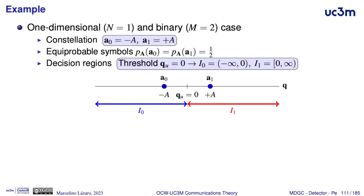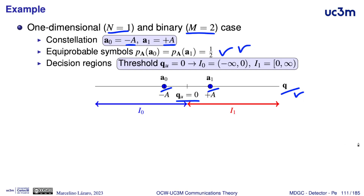We will start the calculation of the symbol error rate with a very simple case: a one-dimensional space, a binary case with two symbols. In this case the vectors representing the symbols are minus A and plus A respectively. We have these two symbols in the one-dimensional input space, and with equiprobable symbols, the decision regions are defined by a threshold in the middle between the two symbols — a threshold at zero — splitting the observation space between the points closer to A0 and the points closer to A1. With equiprobable symbols, we apply the minimum Euclidean distance decision criterion.